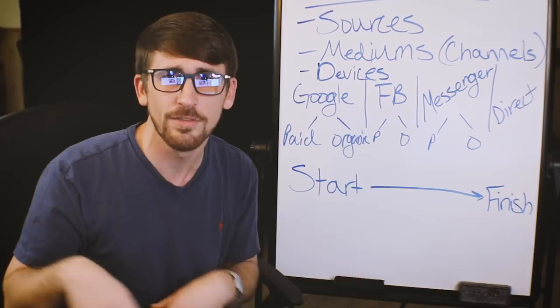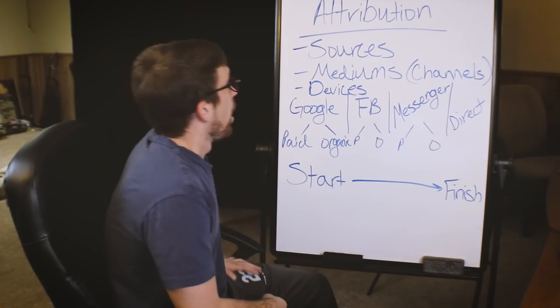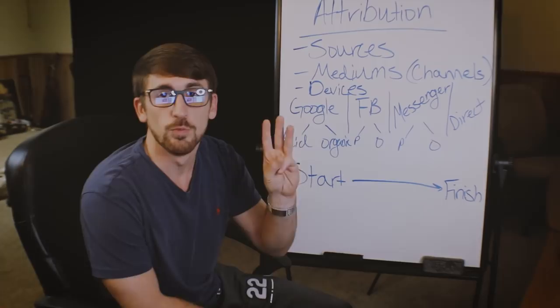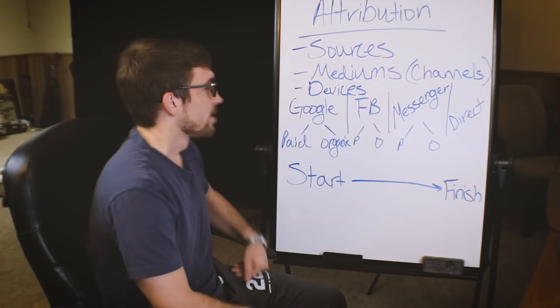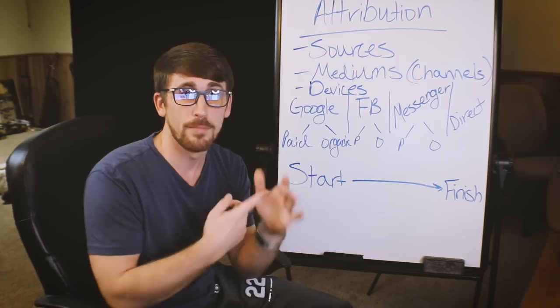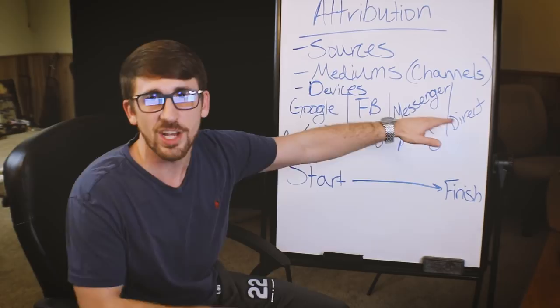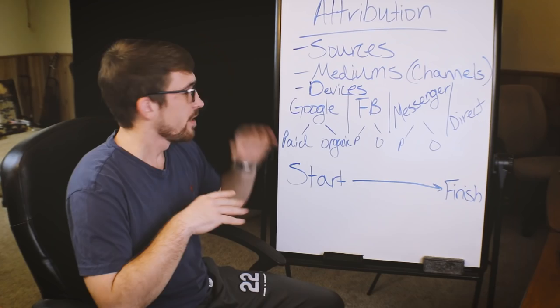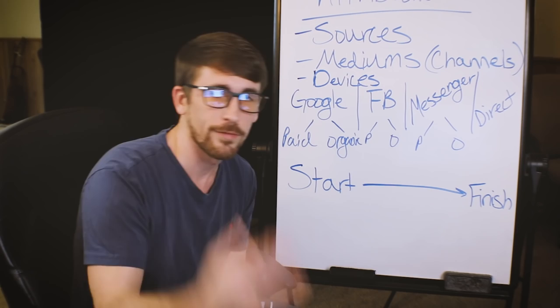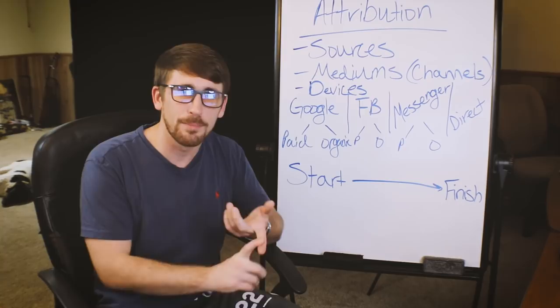With attribution there are three main things to pay attention to. First, sources — what you're tracking: is it Google, Facebook, direct search, ClickFunnels, Messenger? Second, the medium — Facebook calls these channels — which tells you whether it's paid versus organic: did someone come in on an ad or find you organically? Third, devices — is it desktop or mobile? What device are they using to consume your content and ultimately convert?